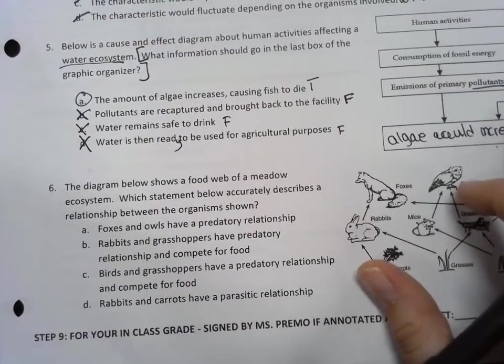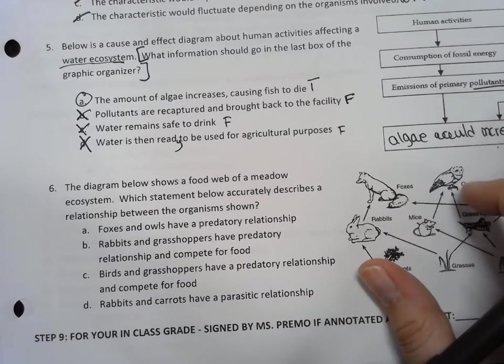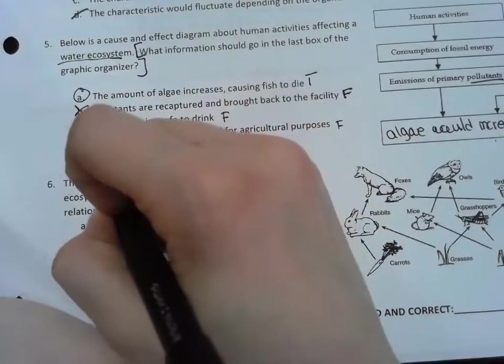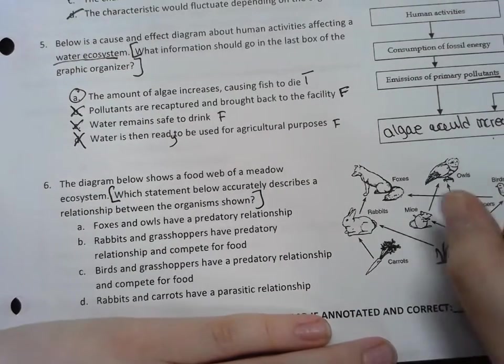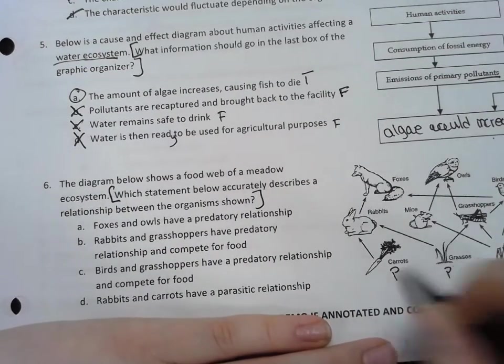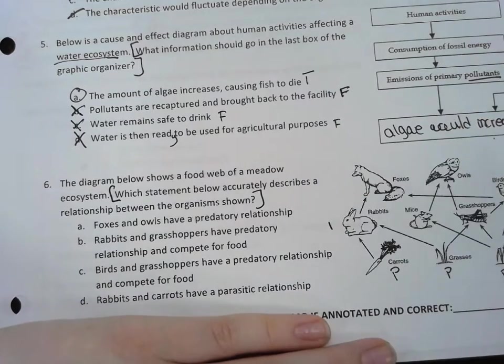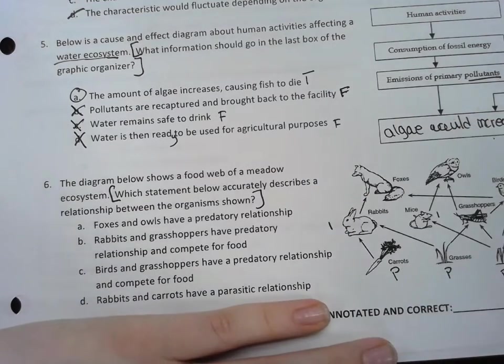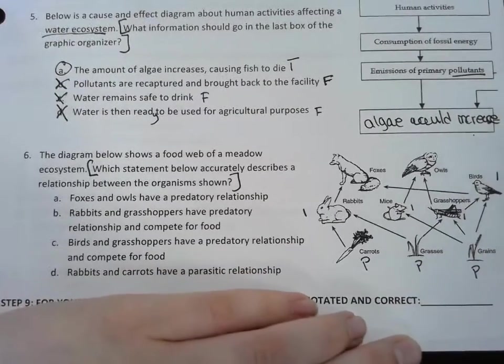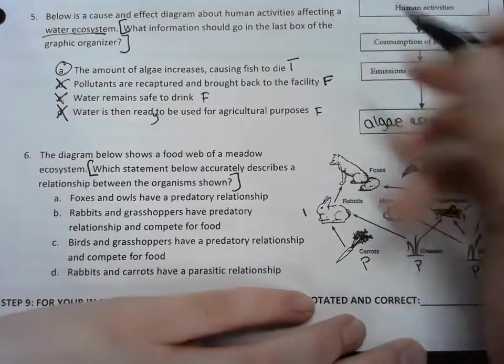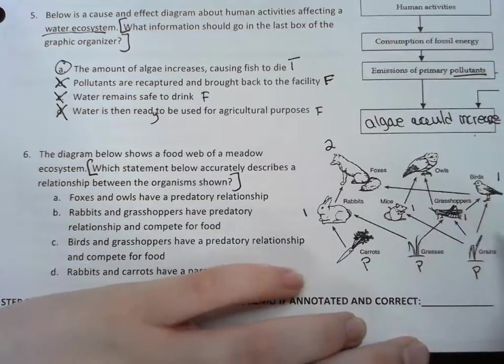Alright, number six: which statement below accurately describes the relationship between the organisms shown? Alright, so let's remember: any sort of plant is going to be a producer, any organism that eats the plant is going to be a primary consumer, and then any organism that eats a primary consumer is going to be a secondary consumer.